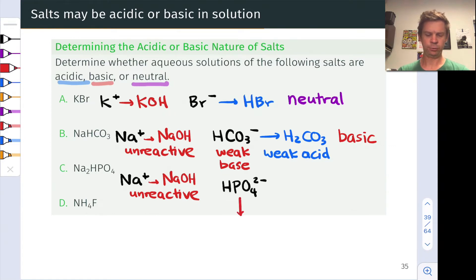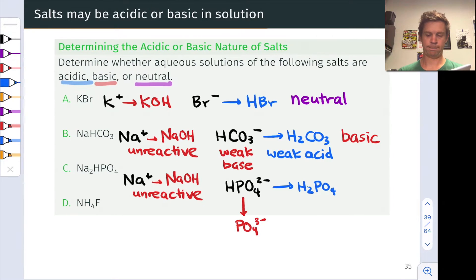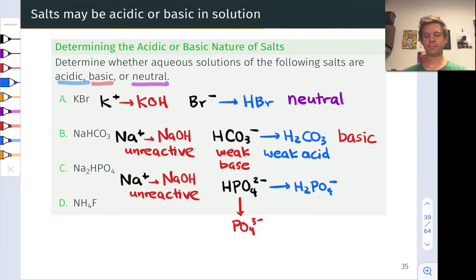If this loses a proton, we would end up with PO4 3 minus. If this gains a proton, we would end up with H2PO4 minus. What actually dominates, the behavior that actually dominates here depends on the relative K values associated with these two processes. Gaining a proton to make H2PO4 minus and losing a proton to make PO4 3 minus.